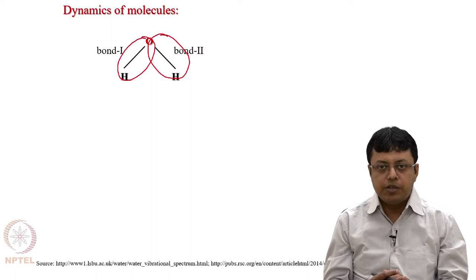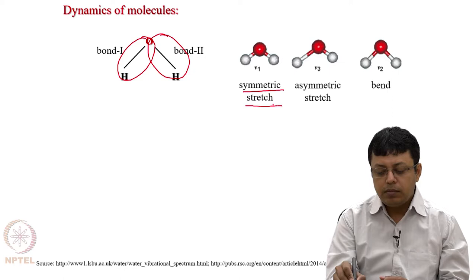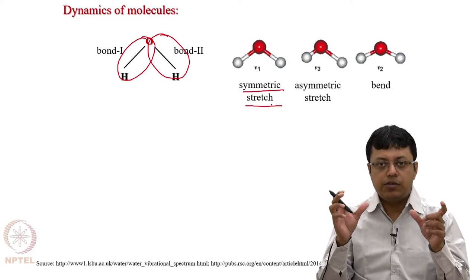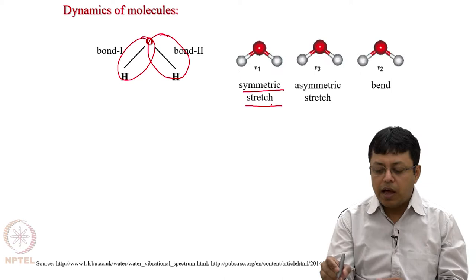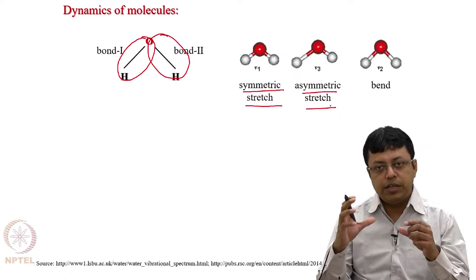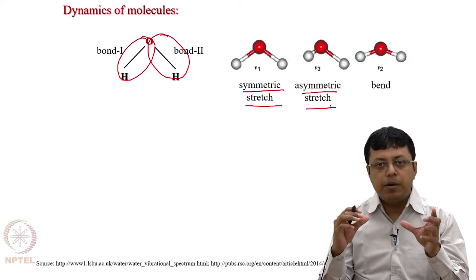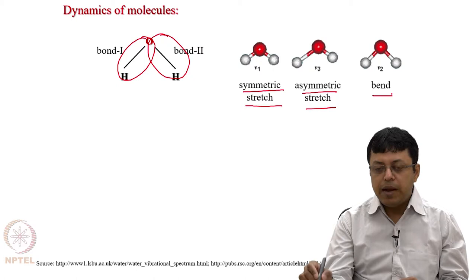One vibration is a symmetric stretch, shown in the animation, where the 2 bonds of water are stretching or compressing simultaneously - that is why it is called symmetric. Similarly, there is an asymmetric stretching vibration where one bond stretches while the other compresses, meaning the two bond vibrations are out of phase. There is also a bending motion where these 2 bonds bend.